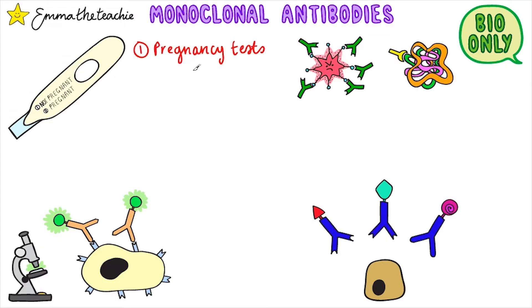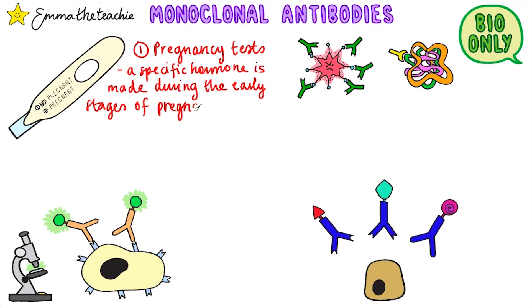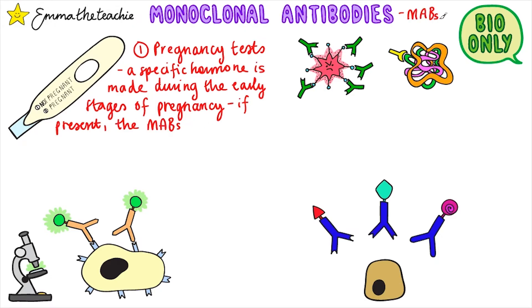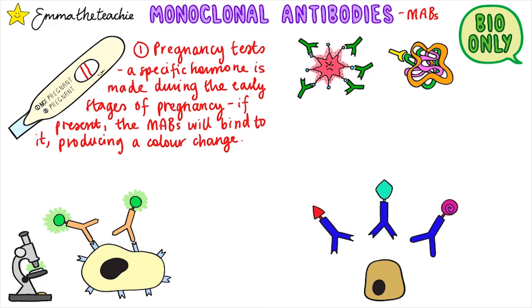The first is pregnancy tests. A specific hormone is made during the early stages of pregnancy, and if it's present, monoclonal antibodies (MABs) will bind to it and cause a color change to indicate pregnancy.